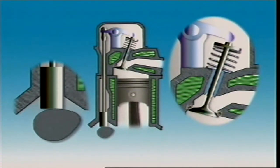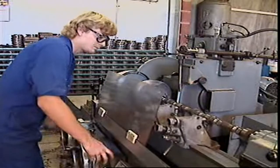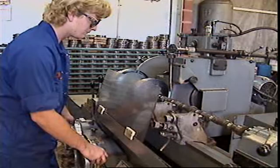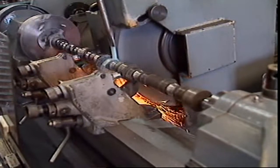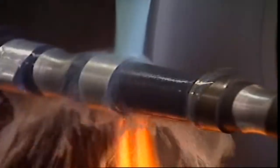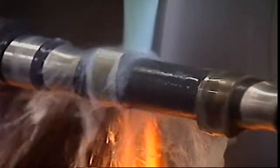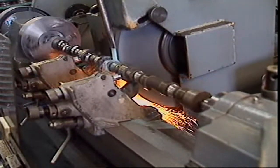On engines without valve lash adjusters, a quietening ramp is built into the shape of the cam. This makes for quieter operation during the opening of the valve. The shape of the nose determines how long it stays open.